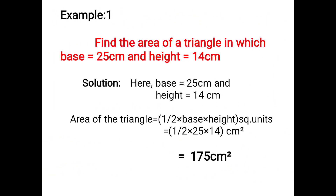Example 1: Find the area of a triangle in which the base is 25 cm and the height is 14 cm. Using the formula: area equals half into base into height — we substitute 25 for base and 14 for height. Cancelling 2 from 14 gives 7, and 7 into 25 equals 175. So the area of the triangle is 175 cm squared.